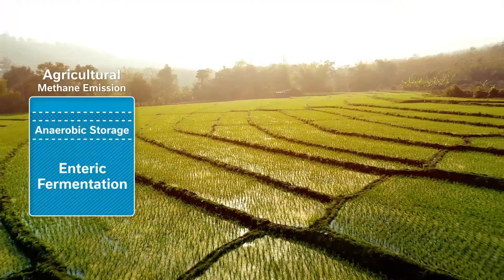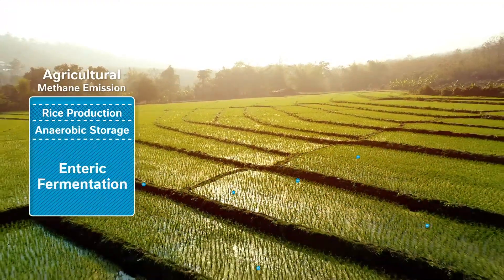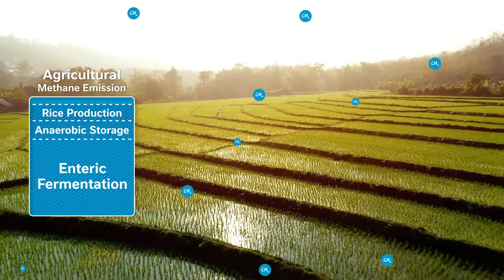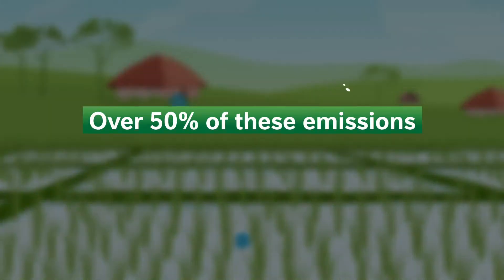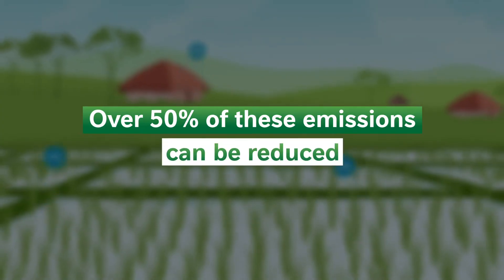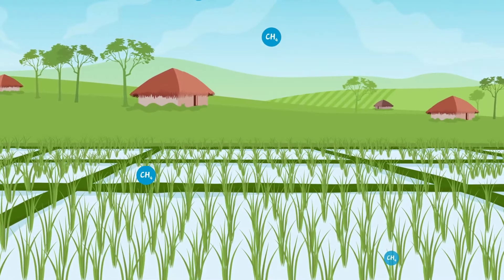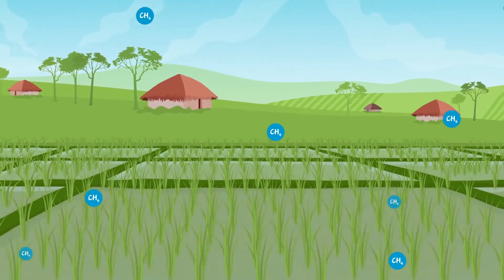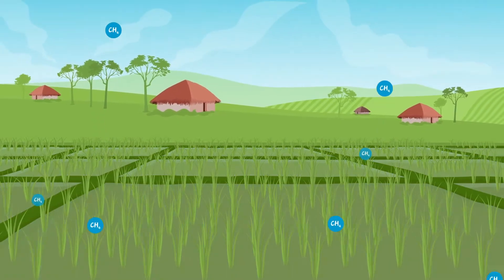About one-fifth of agricultural methane emissions come from paddy rice production. It is estimated that over 50 percent of these emissions can be reduced through improved water management such as alternate wetting and drying, nutrient management, and reduced tillage.